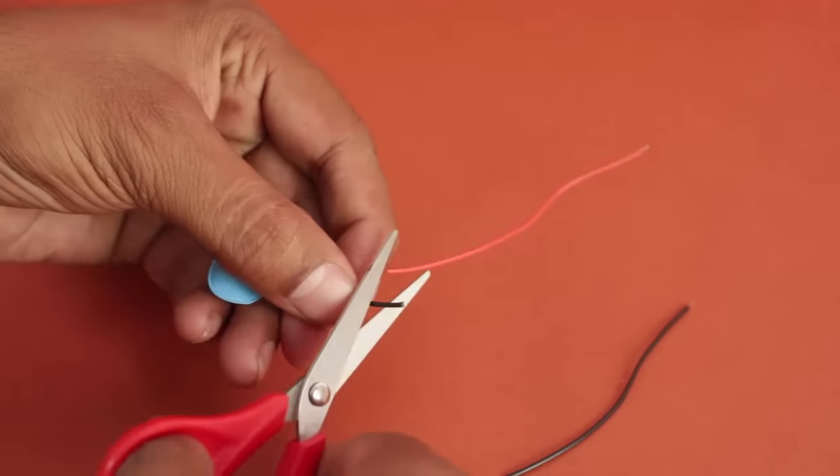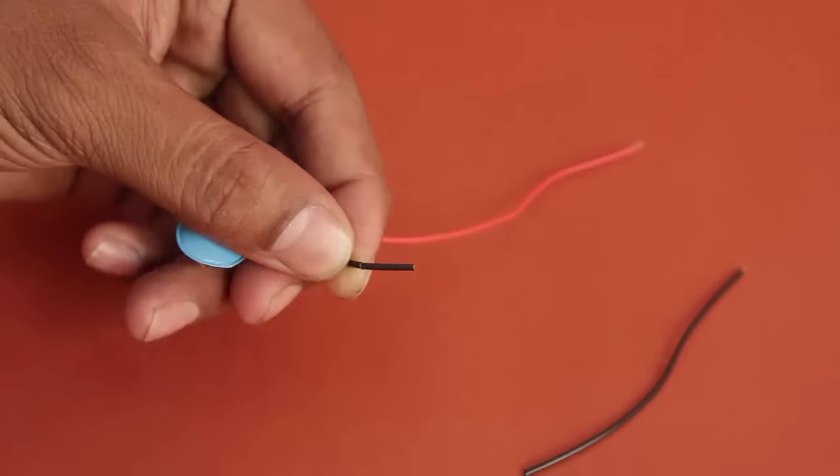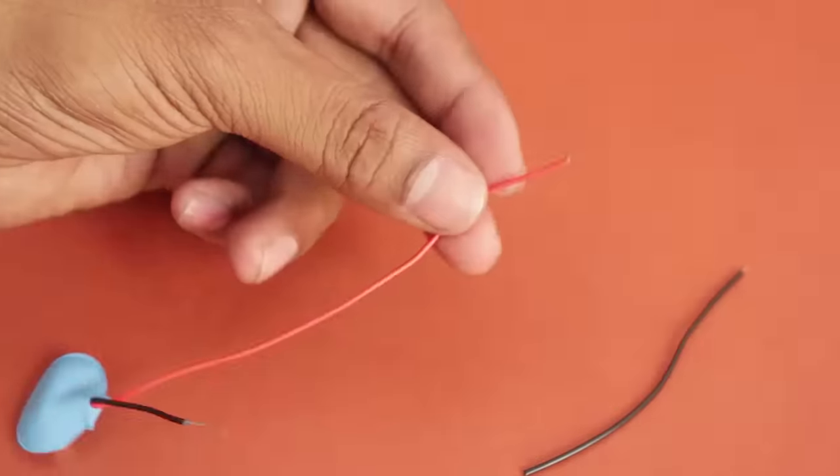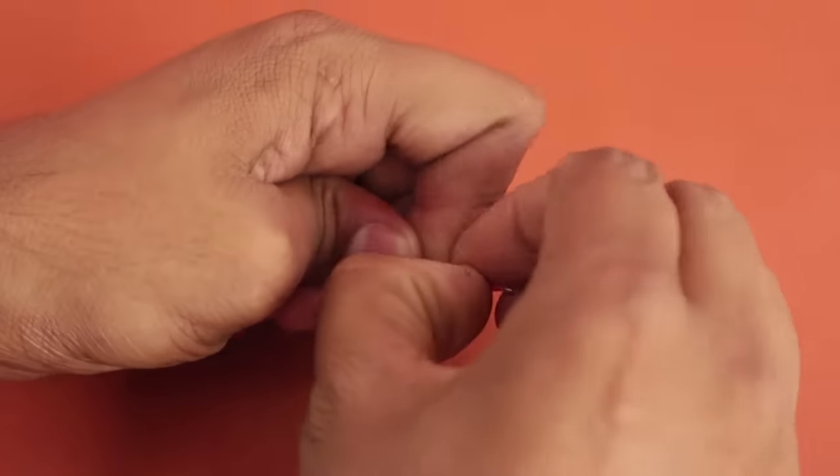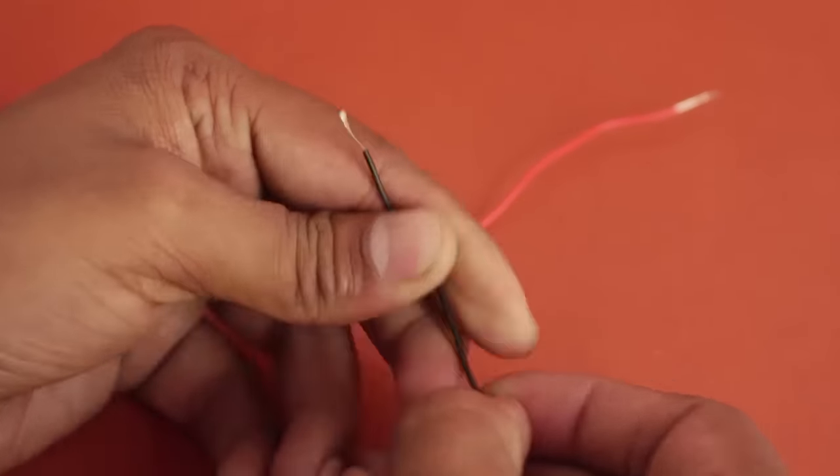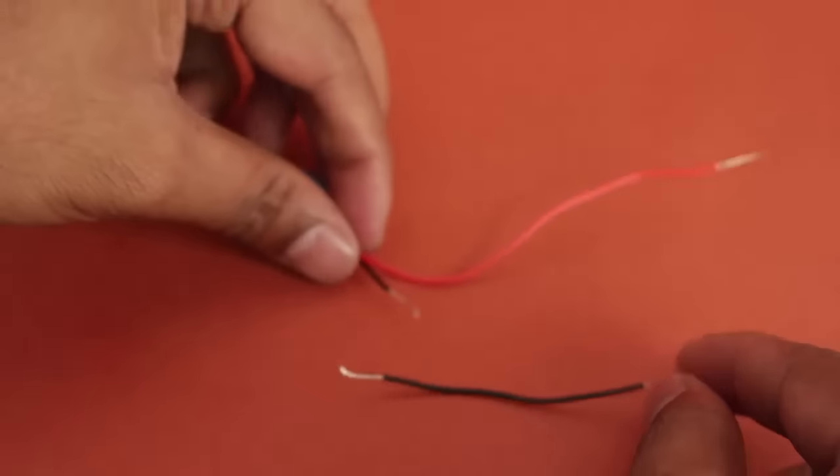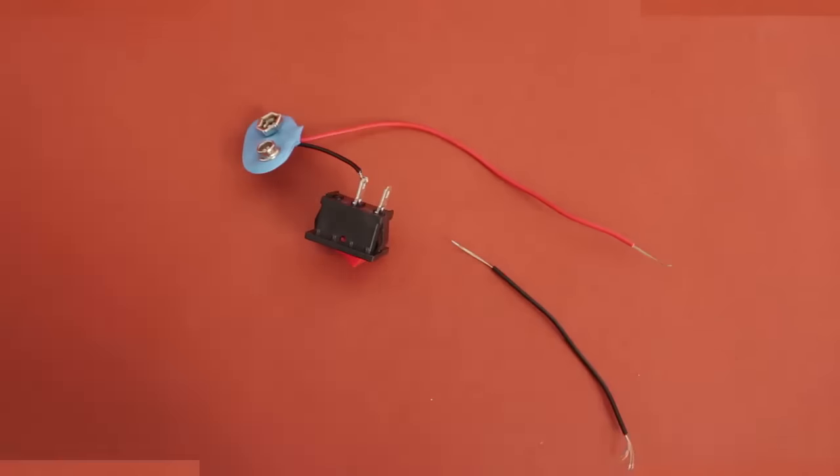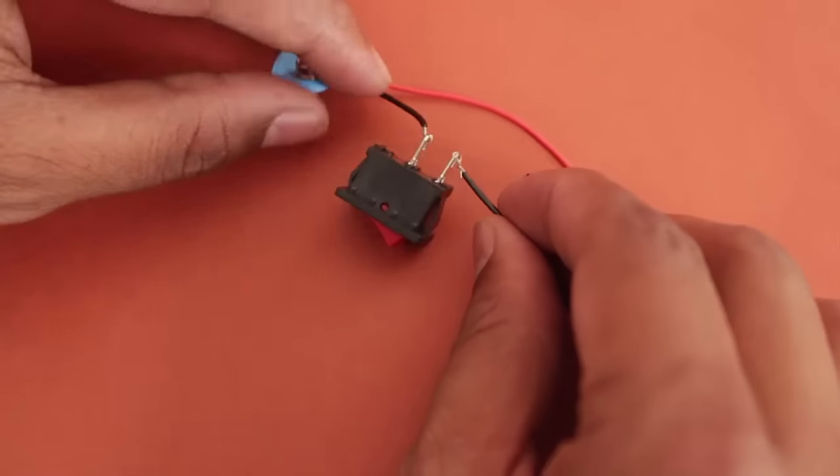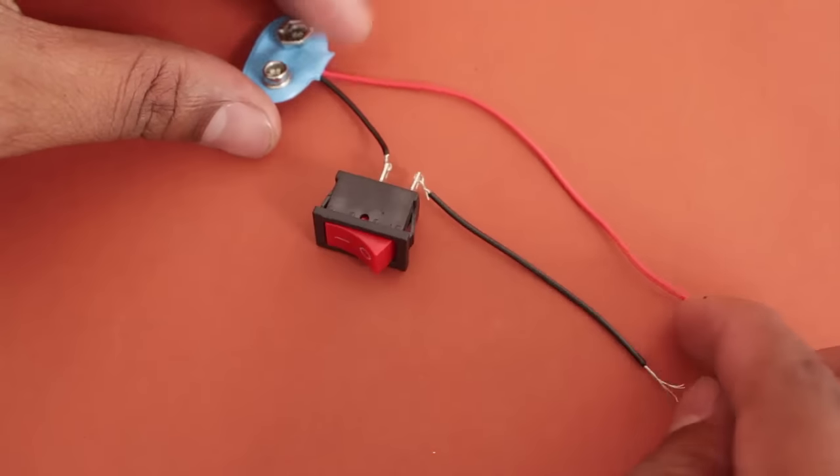Take the battery connector and remove the plastic from the wire ends to expose the copper. Take a small wire and join the battery connector in series to an on-off switch. Now the switch is in series with the connector.